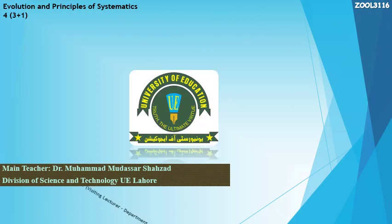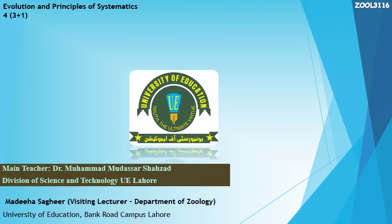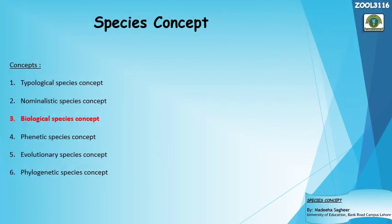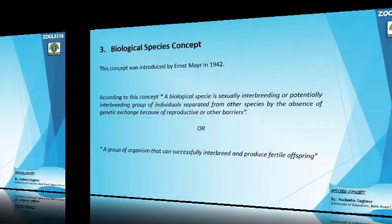Assalamu alaikum, this is Madeha Sahir from the Department of Zoology, Bankrot Campus, University of Education Lahore. In the first part of this lecture we talked about the typological species concept and the nominalistic species concept. Today in the second part we are going to discuss the biological species concept — its basic idea, main advantages, and shortcomings.